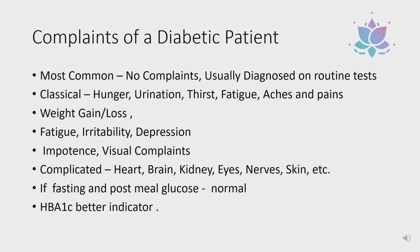Then there is the classical presentation described in medical school: the patient has more hunger, more urination, more thirst, fatigue, and may complain of generalized aches and pains. This is common when diabetes is of longer duration and sugar values are very high — you see polydipsia, polyuria, polyphagia — but that is less common in the earlier stage.